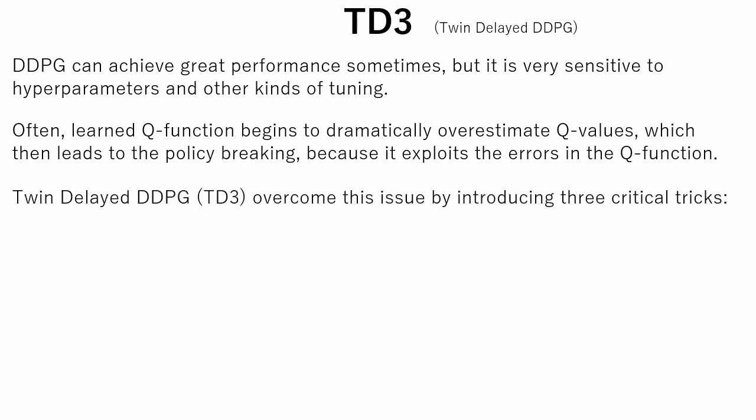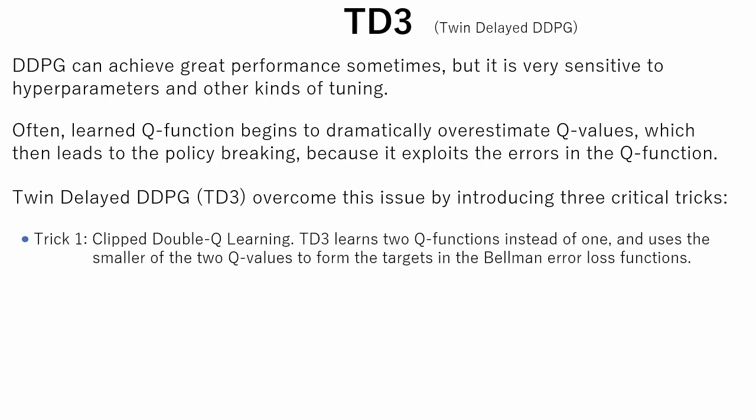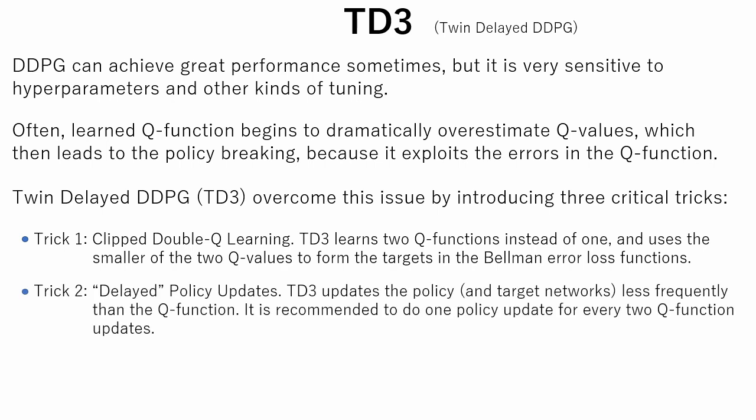TD3 overcomes this issue by introducing three critical tricks. The first is clipped double Q learning. TD3 learns two Q functions instead of one, and uses the smaller of the two Q values to form the targets in the Bellman error loss functions. The second is delayed policy updates. TD3 updates the policy and target networks less frequently than the Q function. It is recommended to do one policy update for every two Q function updates.